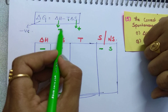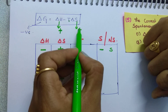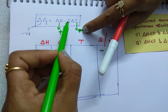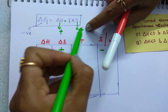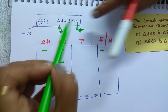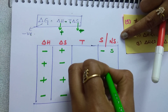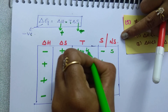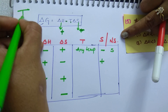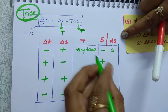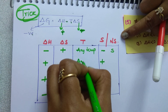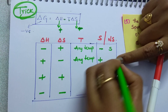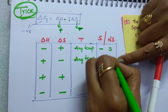Case 2: delta H is positive and delta S is negative. Negative times negative gives a positive T·delta S term, and delta H is also positive. Both terms are positive, so delta G is positive at any temperature — meaning the reaction is non-spontaneous at all temperatures.